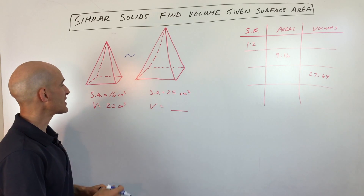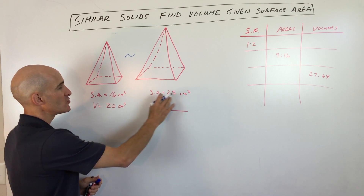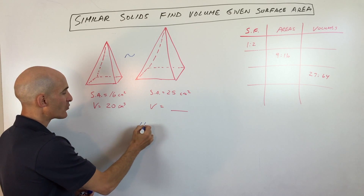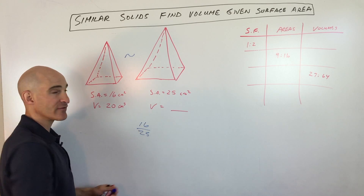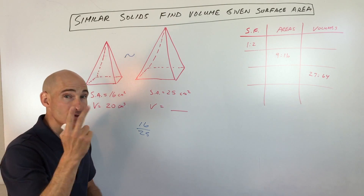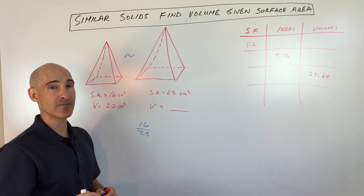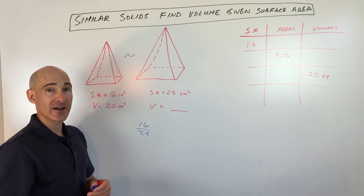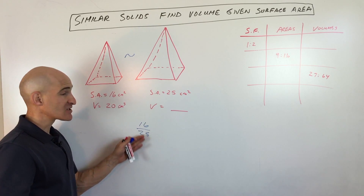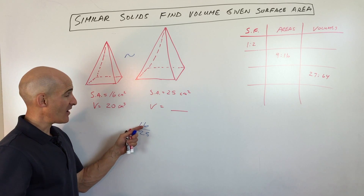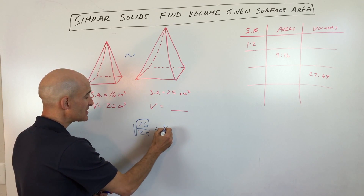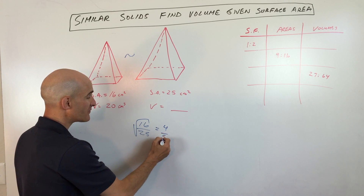Here we're given two square pyramids. You can see the bases are squares — they're pyramids. This pyramid is a little bit larger than this pyramid, but in this example they tell us that the two pyramids are similar. That means the corresponding angles are congruent, and the ratios of the side lengths are proportional. So one figure is proportionally larger — it's not distorted. It's scaled according to a certain scale factor.